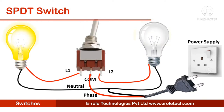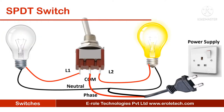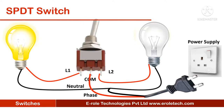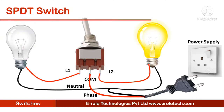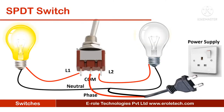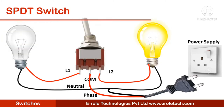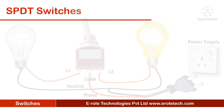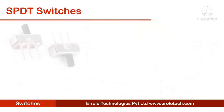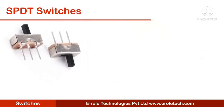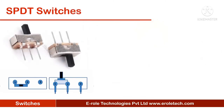For example, you can control two bulbs using a single switch. When the left bulb is on, the right bulb turns off, and when the right bulb is on, the left bulb turns off. These are some common types of SPDT switches.